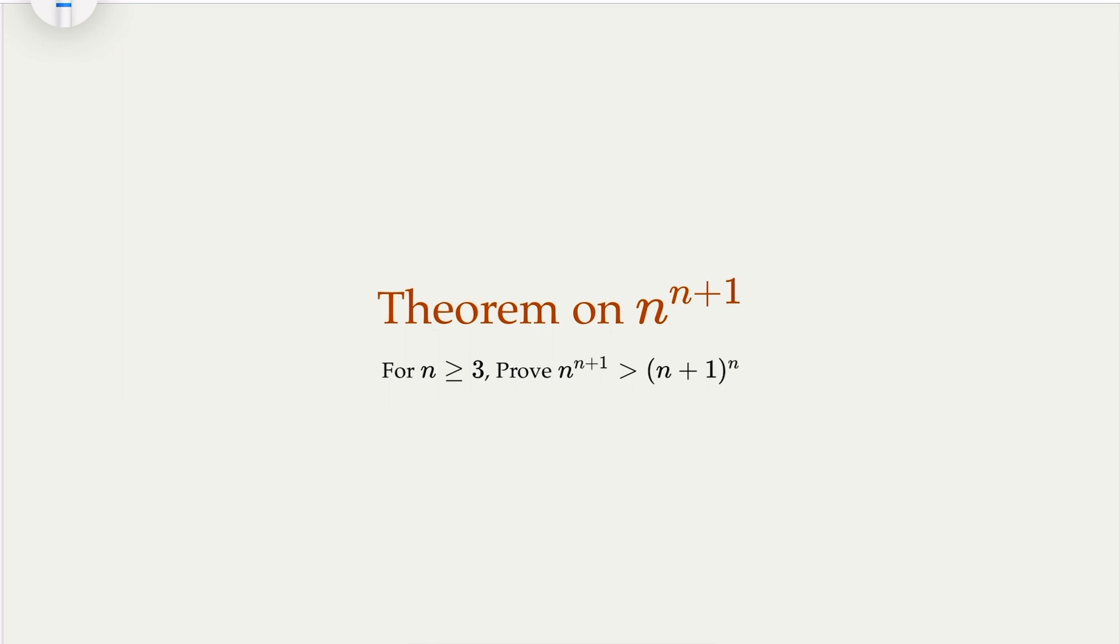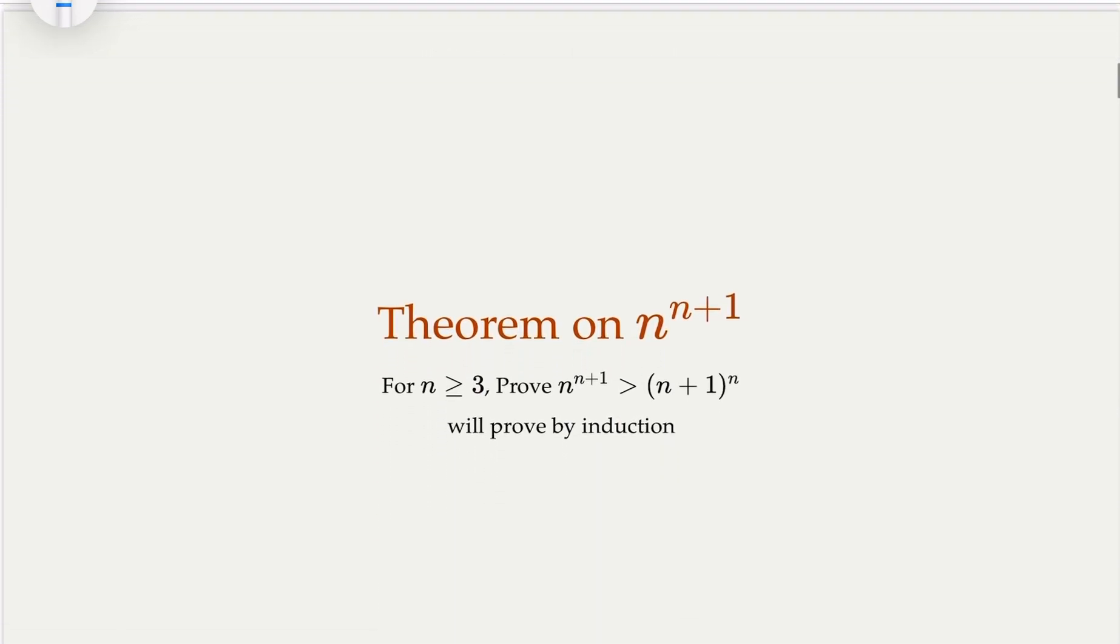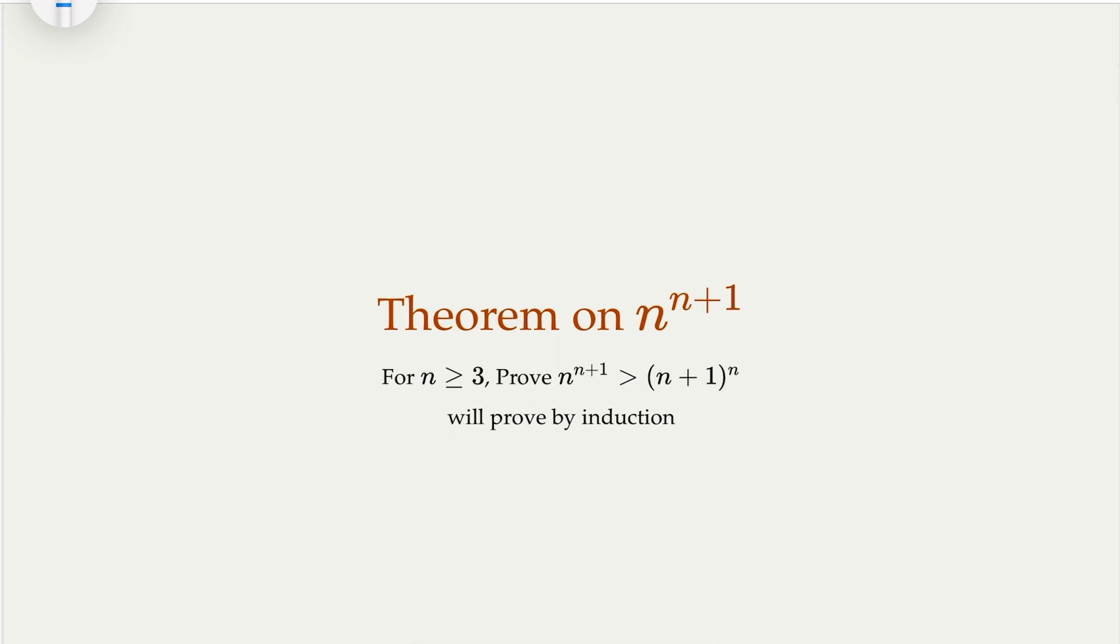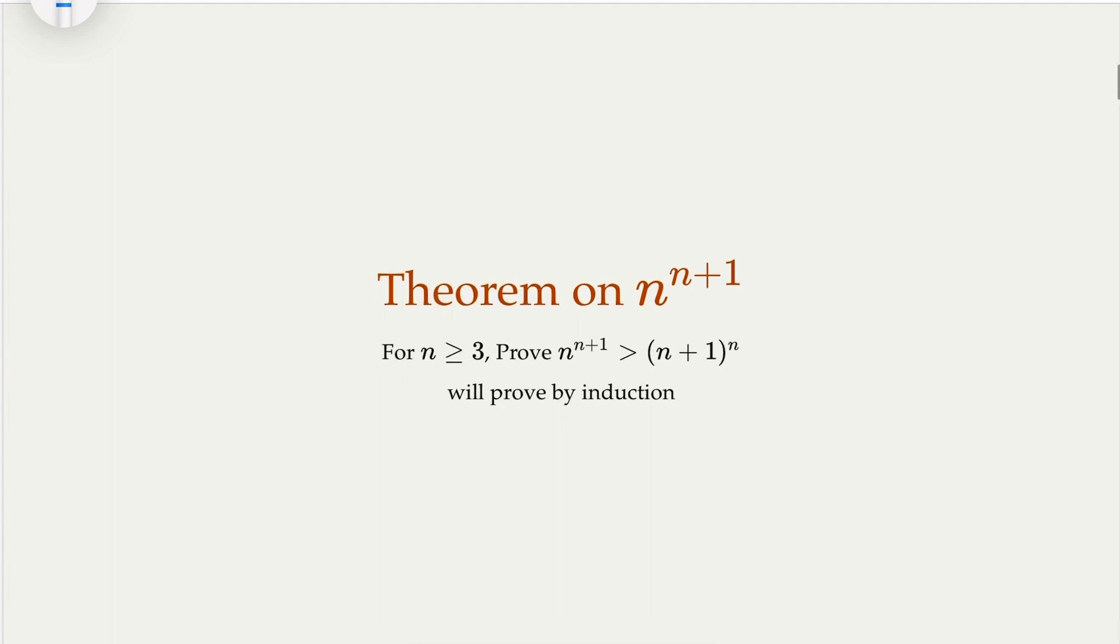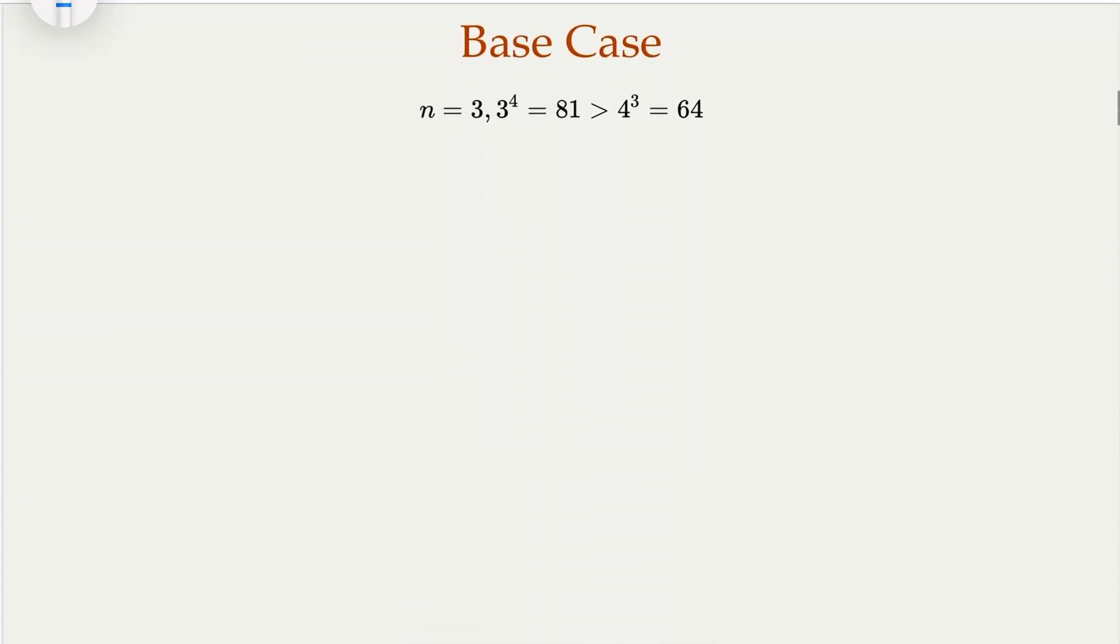Remember, the structure of mathematical induction is that you start with base cases, and then you have an induction step. Now, in our case, the base case here is going to be n equal to 3. So let's check. When n equals 3, 3 to the 4th power is 81, 4 to the 3rd power is smaller, 64. So the base case is proven.